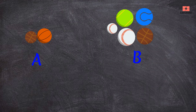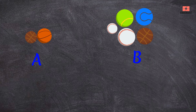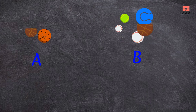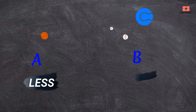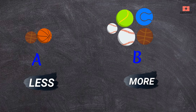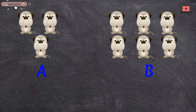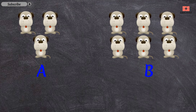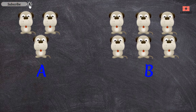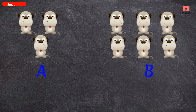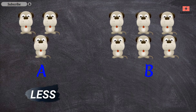Picture A has two balls and picture B has five balls, so picture A has less balls and picture B has more balls. Picture A has three dogs and picture B has six dogs, so A has less dogs and B has more dogs.